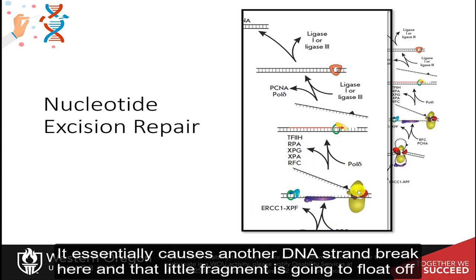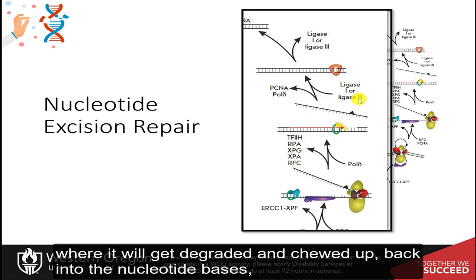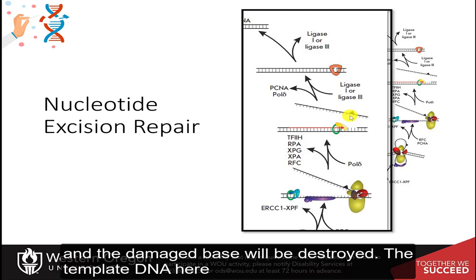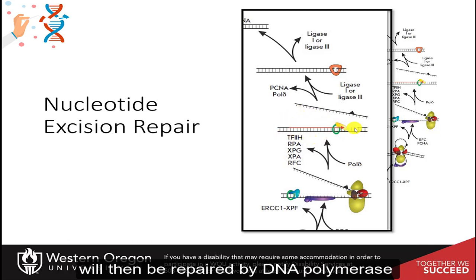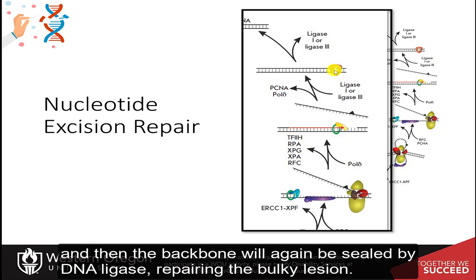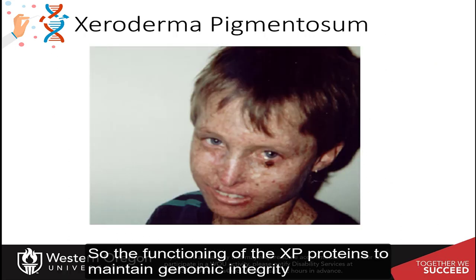This essentially causes another DNA strand break, and that small fragment floats off where it gets degraded and chewed up back into the nucleotide bases, and the damaged base is destroyed. The template DNA is then repaired by DNA polymerase, and the backbone is again sealed by DNA ligase, repairing the bulky lesion.